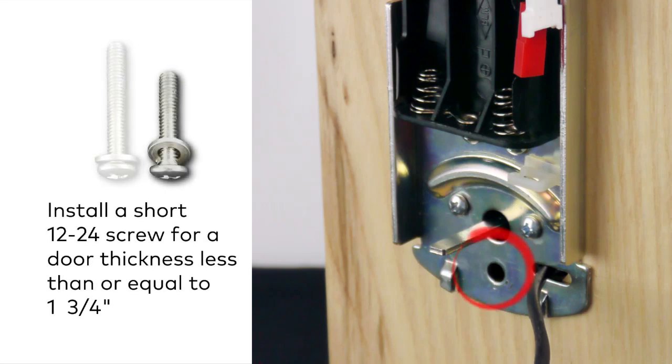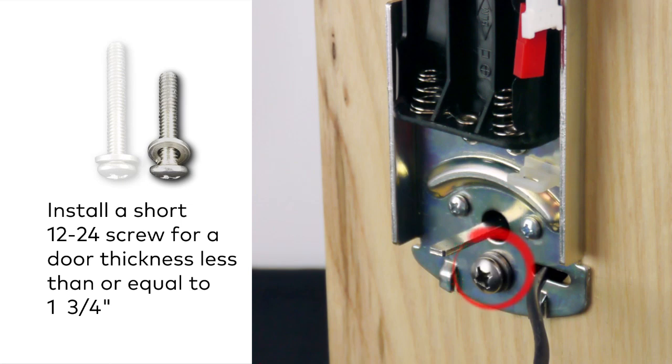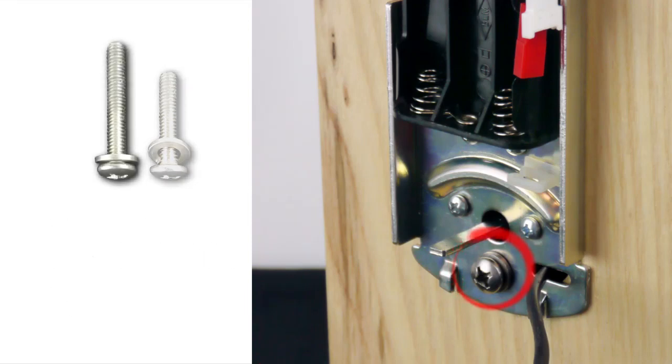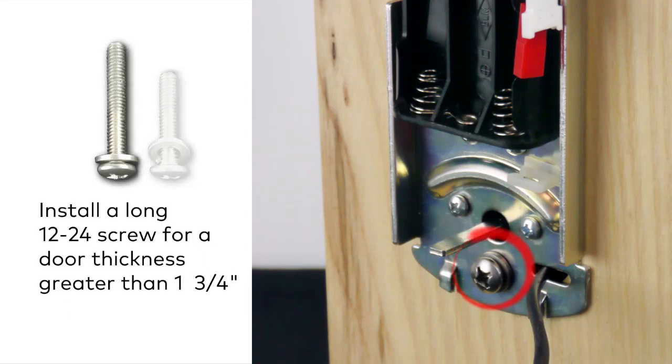And finally, install a short 12x24 screw with a lock washer if the door thickness is less than or equal to 1 3/4 inch. Install a long 12x24 screw with a lock washer if the door thickness is greater than 1 3/4 inch.